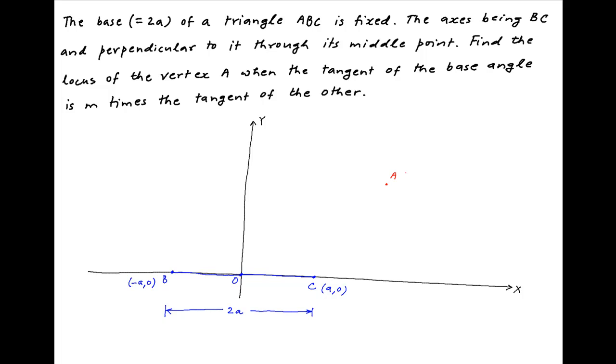Let's assume that the coordinates of the vertex A are (H, K). Join point B to point A and point C to point A to complete triangle ABC.